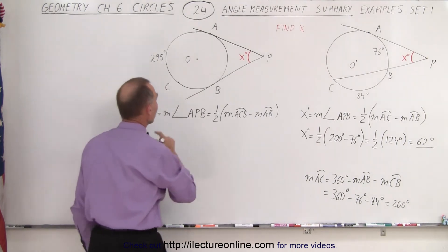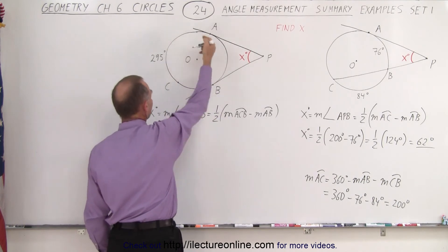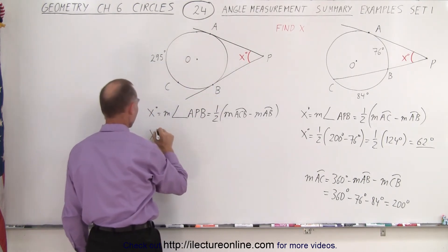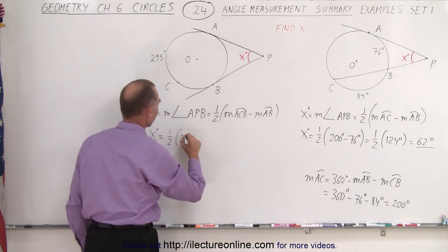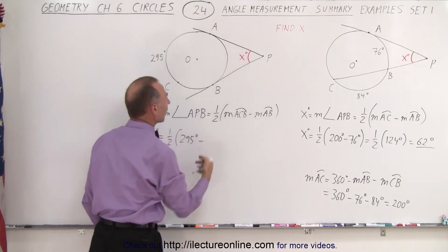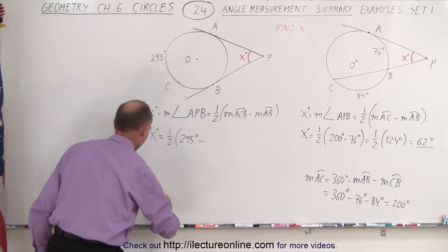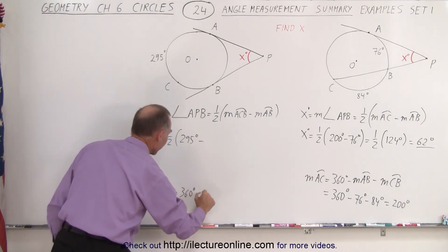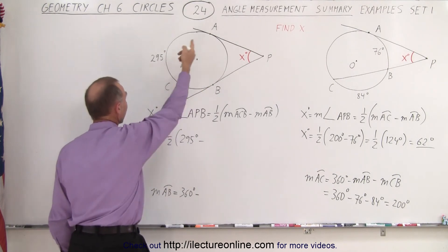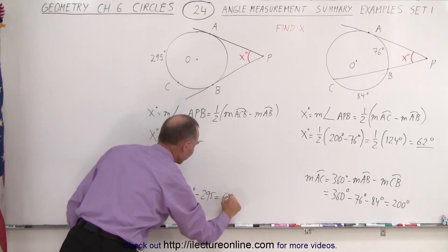Now let's plug in what we have. We're given this arc length, so x is equal to one-half times the measure from A to C to B, that's 295 degrees, minus the measure from A to B on the short side. We're not given that directly, however we can say the measure from A to B is equal to 360 degrees minus 295 degrees, which is 65 degrees.